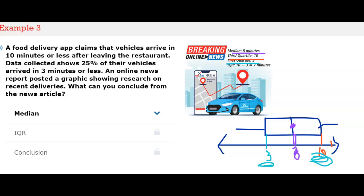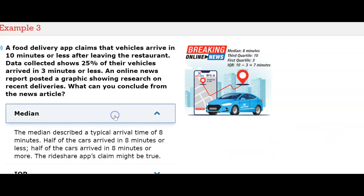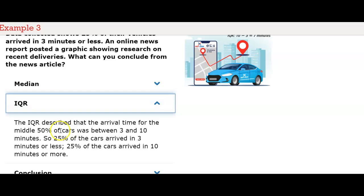Now we'll go to reading about the median. The median described a typical arrival time of 8 minutes. Half of the cars arrived in 8 minutes or less. Half of the cars arrived in 8 minutes or more. The rideshare app's claim might be true. The IQR described that the arrival time for the middle 50% of the cars was between 3 and 10 minutes. 25% of the cars arrived in 3 minutes or less. 25% of the cars arrived in 10 minutes or more.